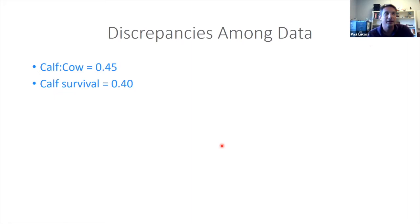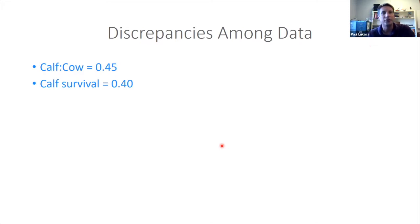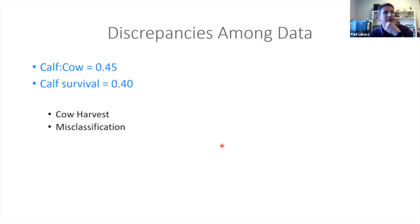Another common issue is in birth rate data. For example, maybe you observe young with their females just before denning and get a ratio of 0.45 young per female, but you get a survival rate of 0.4. For elk, if we thought about only one calf per cow, and they survived at 0.4, there can't be a 45% ratio left. These sorts of discrepancies happen all over the place — changes in ratios due to harvest or misclassification, lots of things bring us to data discrepancies.